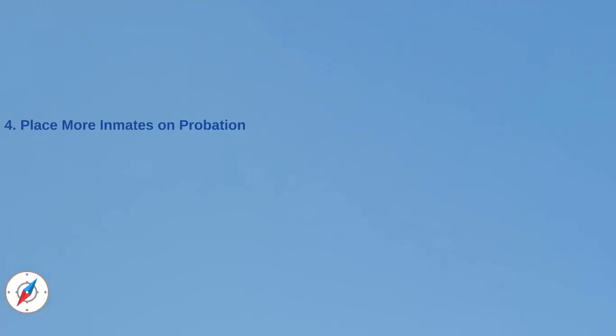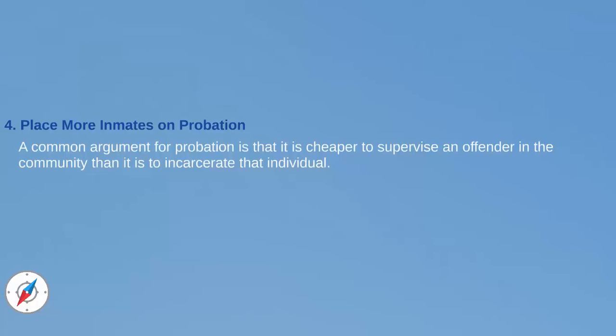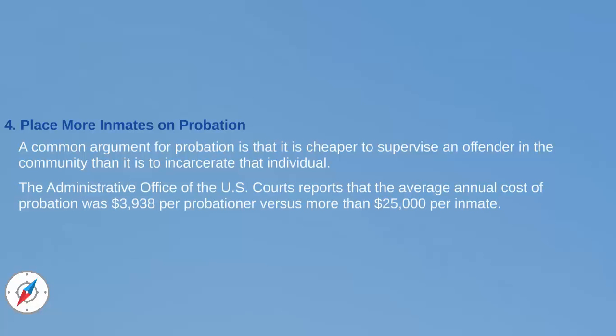Fourth, Congress could place more inmates on probation. A common argument for probation is that it is cheaper to supervise an offender in the community than it is to incarcerate the individual. The Administrative Office of the U.S. Courts reports that the average annual cost of probation was almost $4,000 per probationer versus more than $25,000 per inmate.